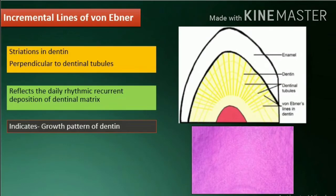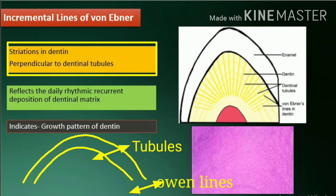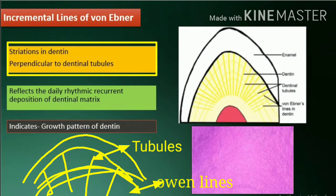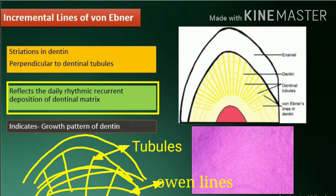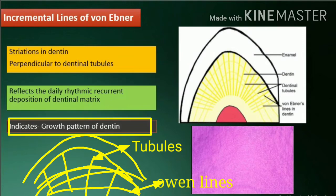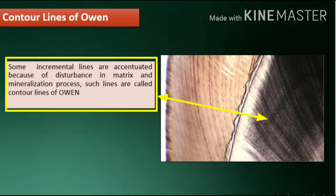Incremental lines of von Ebner are striations in dentin perpendicular to the dentinal tubules. They reflect the daily rhythmic recurrent deposition of dentinal matrix and indicate the growth pattern of dentin. These are also known as contour lines of Owen.